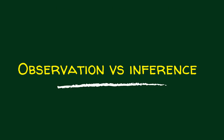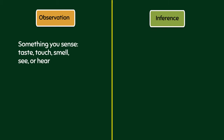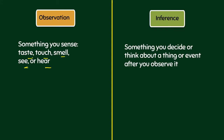Alright, let's now go to observation versus inference. What's the difference between the two? An observation is the gathering of information that uses your five senses — what you taste, what you touch, what you smell, see, or hear. Whereas inference is something that you decide or think about a thing or event after you observe it.